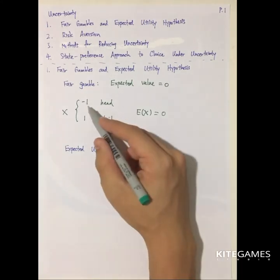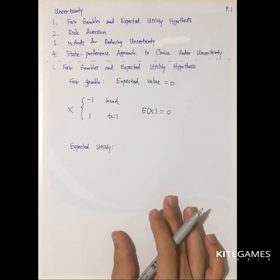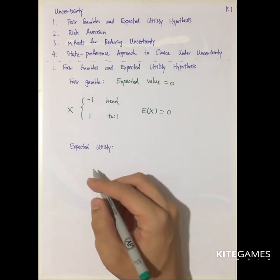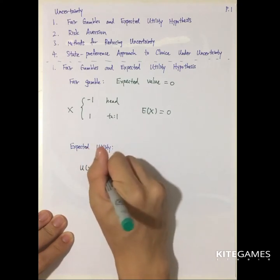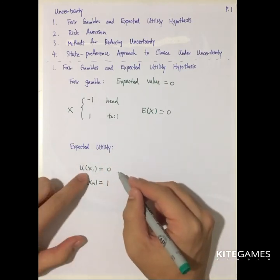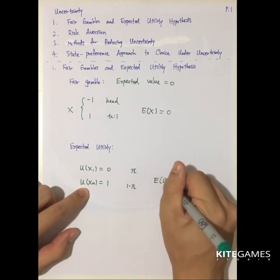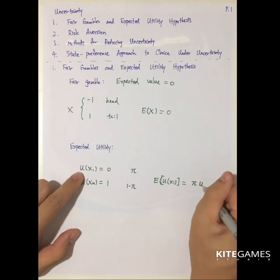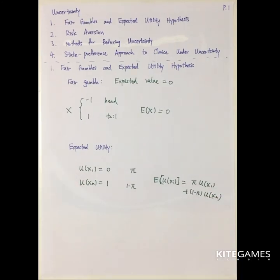If instead of minus one and one, we use minus one and three, then this is an unfair gamble. Another concept is expected utility — it is the probability of some event times the utility attached to that event. Say the expected utility of x1 is zero and of xn is one, with probability pi and one minus pi respectively. Then the expected utility of x equals pi times U(x1) plus (1 minus pi) times U(xn).